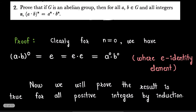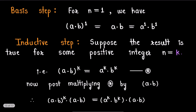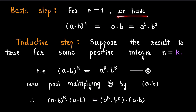We will now prove the result is true for all positive integers by induction. For the basis step, when n = 1, we have (a·b)^1 = a·b = a^1 · b^1. This completes our basis step.